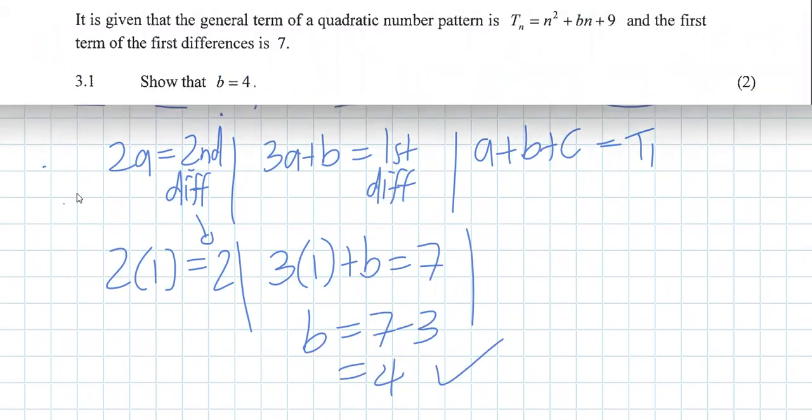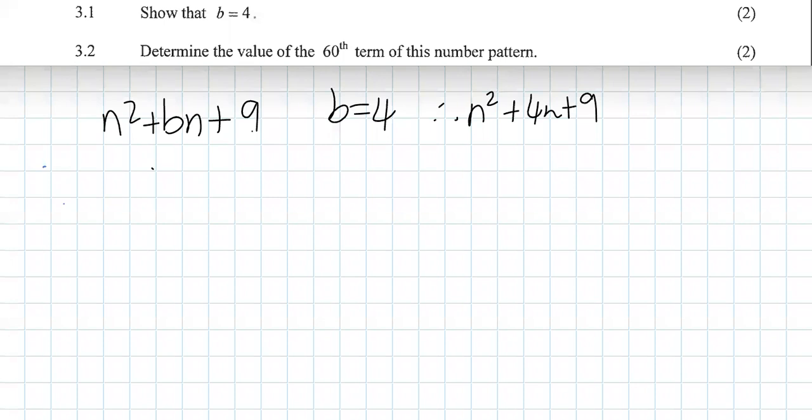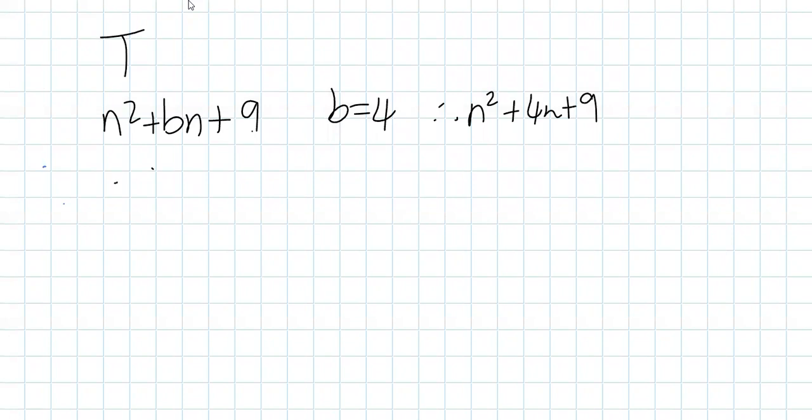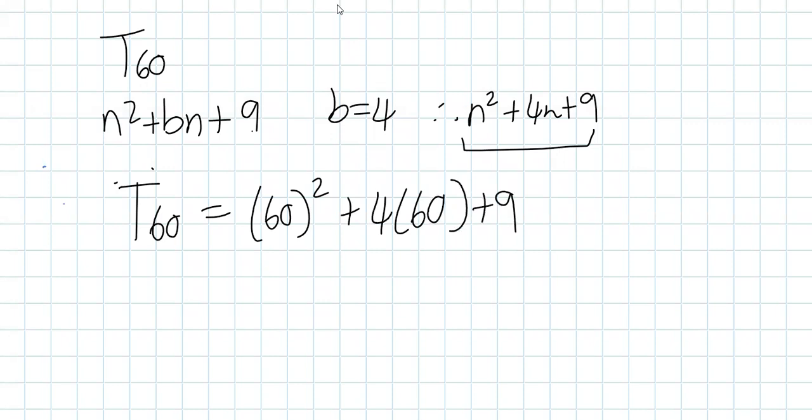B is, in fact, equal to 4. Looking at question 3.2, they asked, please determine the 60th term of this number pattern. So they want the 60th term. They want, what is T60? Well, we know that n squared plus 4n plus 9 is our general term. So T60 is just subbing in 60 wherever you see an n. So it's the 60th term. And if you put this into your calculator, we'll get that the T60 is equal to 3849.